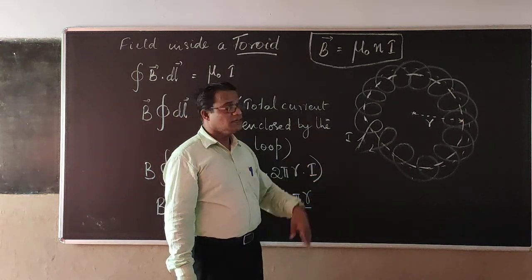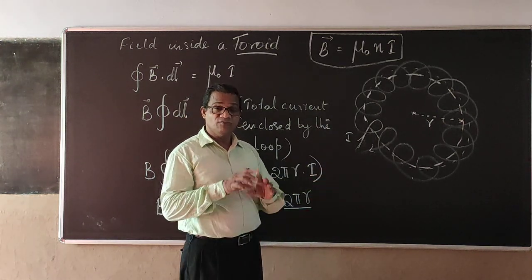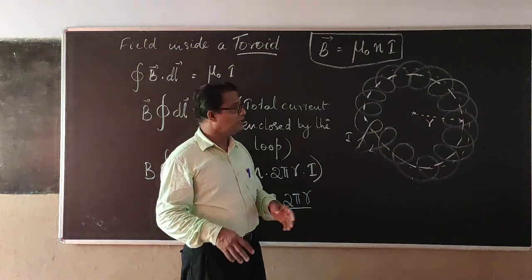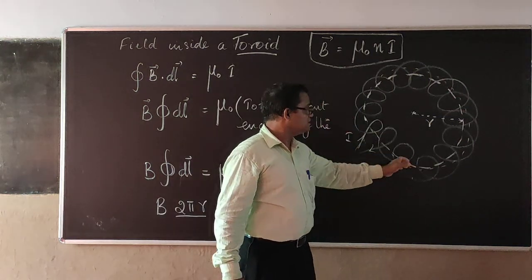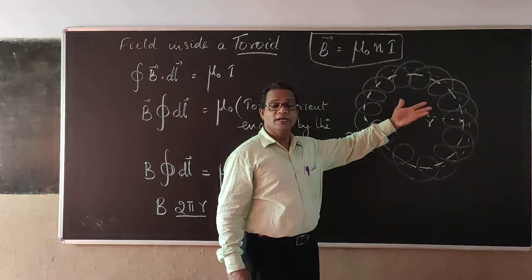So the magnetic field strength inside the solenoid and also inside the toroid will be one and the same. But here the magnetic field is a confined field - the field is totally inside this toroid, no spreading outside.